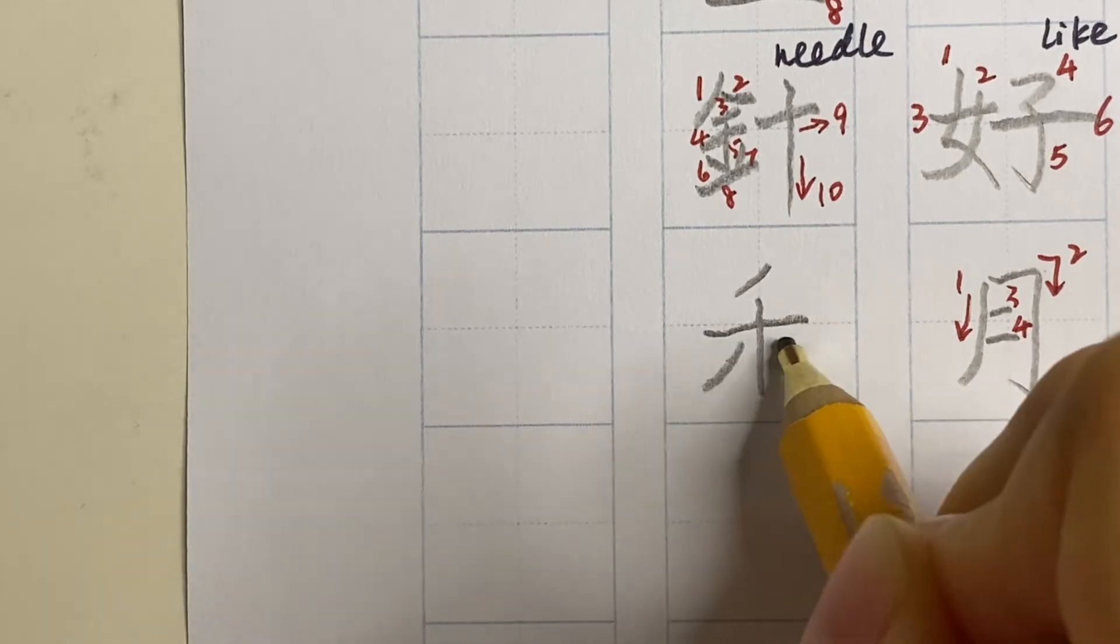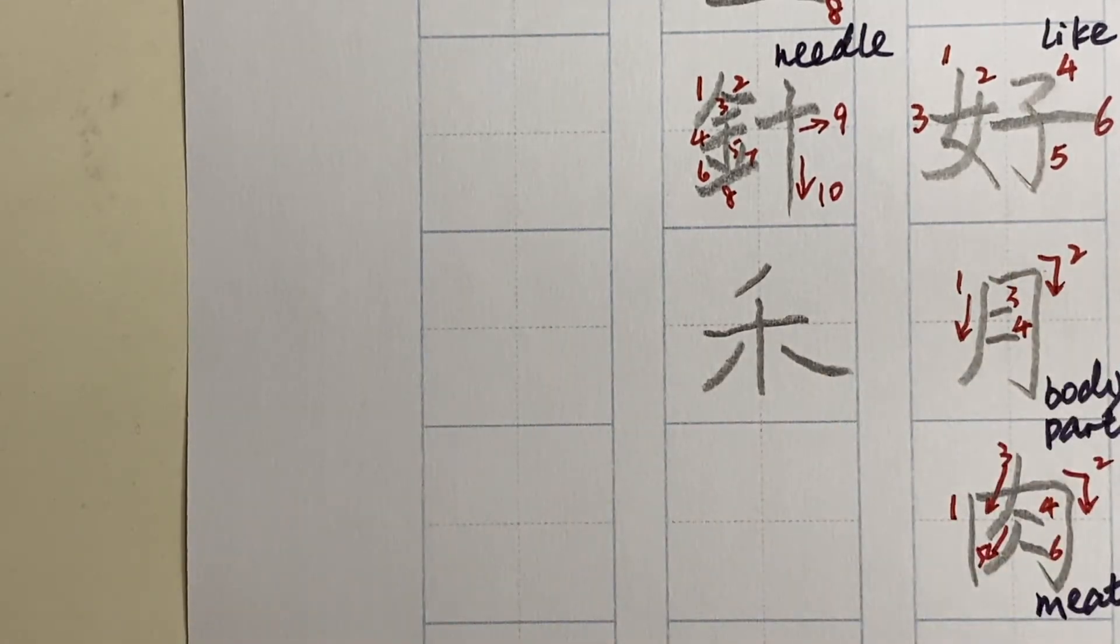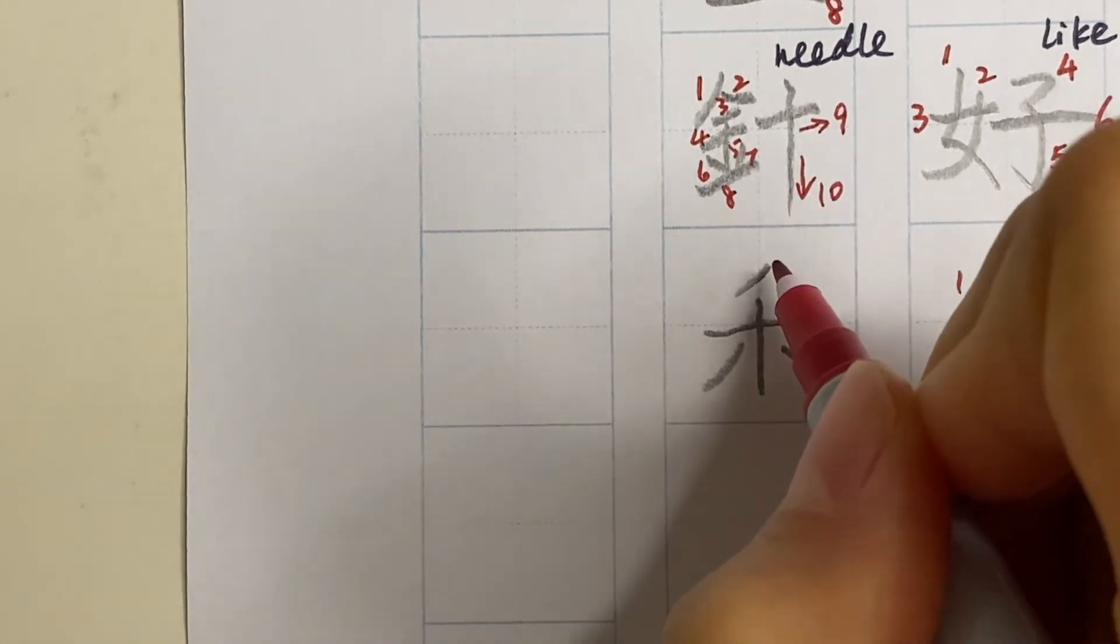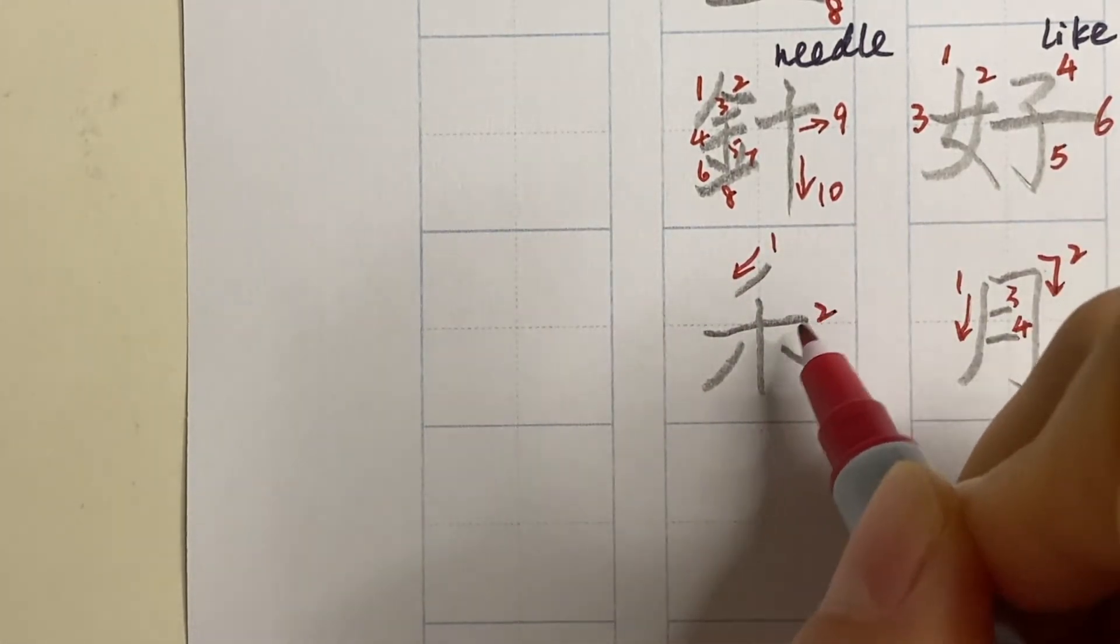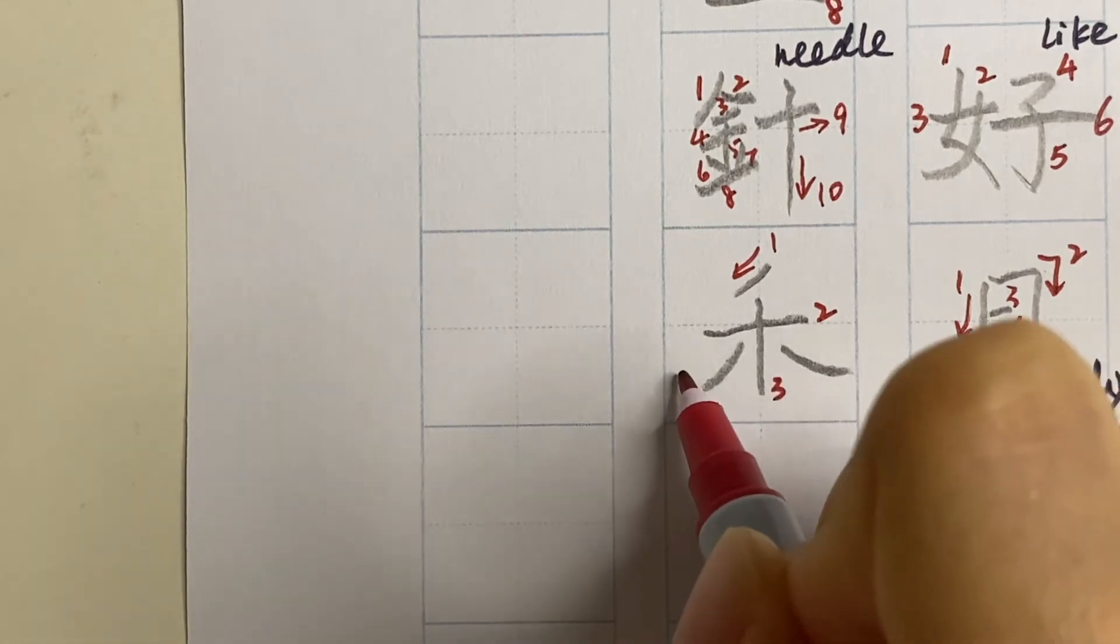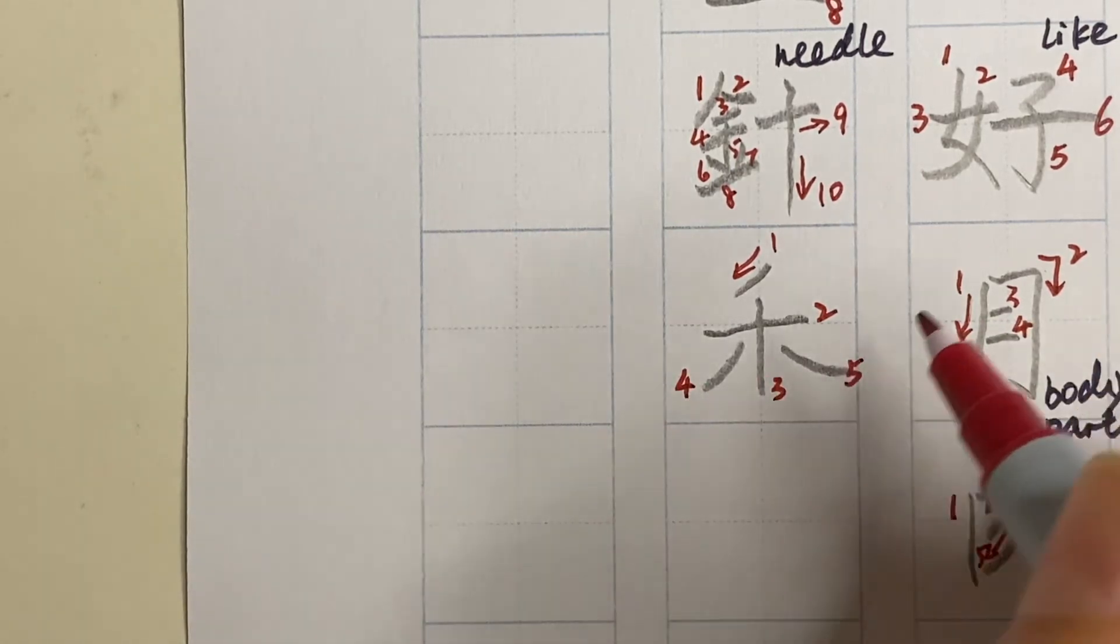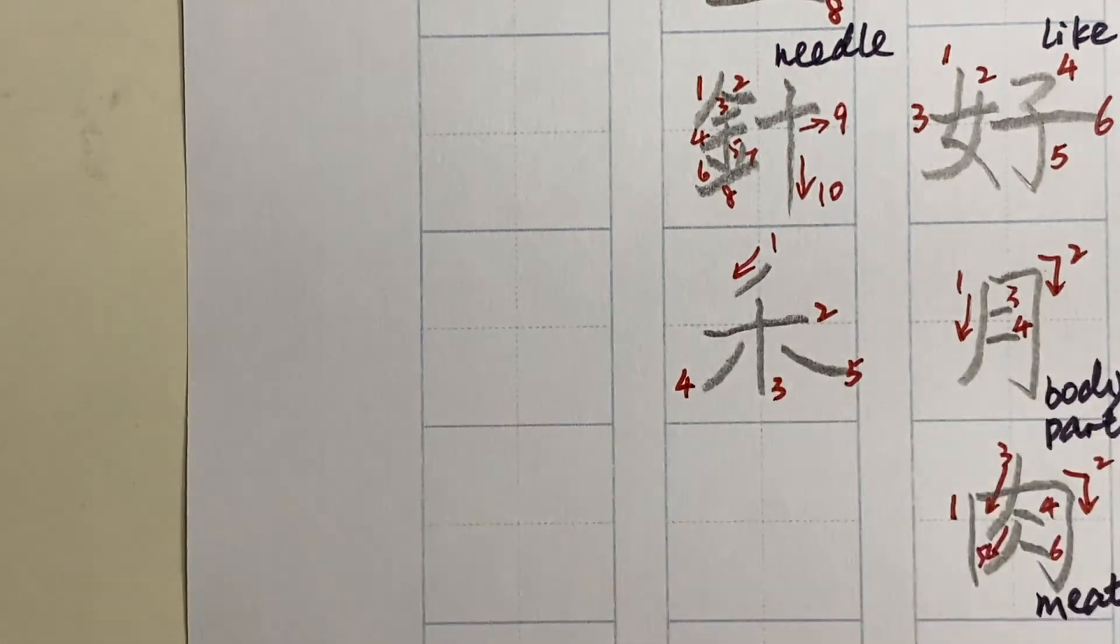The next kanji is also very symmetrical. We start from a slanted small stroke, a horizontal stroke and a vertical one, and left right. It is read as ine or ka. It means rice, grain, or crops.